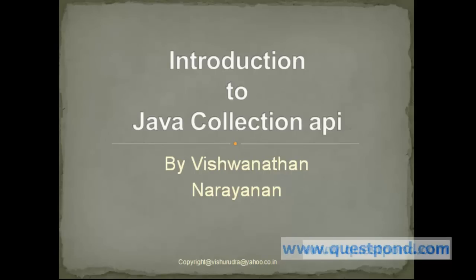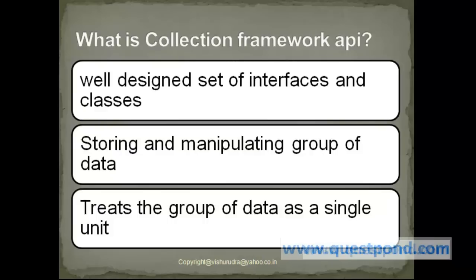Let's see what Java Collection API offers. The Java Collection API is a set of well-defined interfaces and classes which mainly deal with storing and manipulating groups of data. It treats the group of data as a single unit.